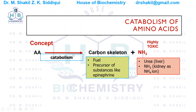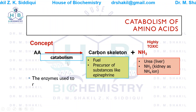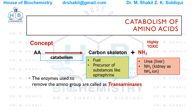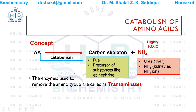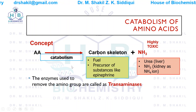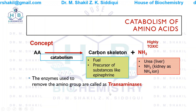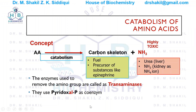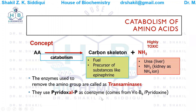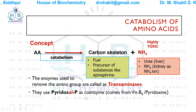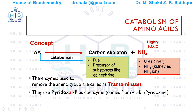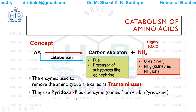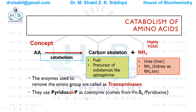This whole reaction is catalyzed by enzymes known as aminotransferases, also called transaminases — aminotransferase is the preferred term. They use pyridoxal phosphate as a coenzyme. Pyridoxal phosphate comes from vitamin B6, also known as pyridoxal — the 'al' stands for aldehyde group. The aldehyde group is transferred to the keto acid.